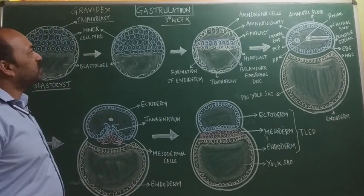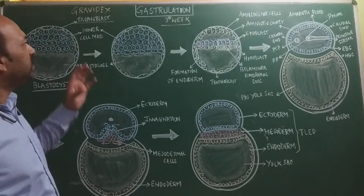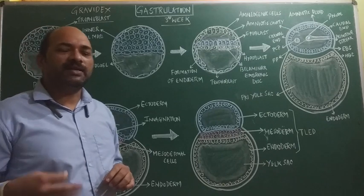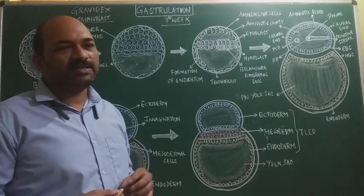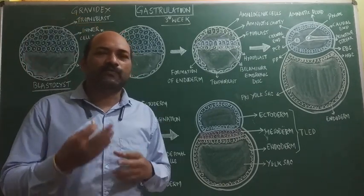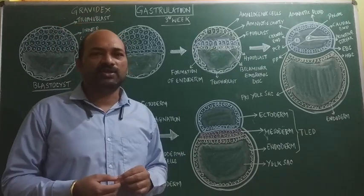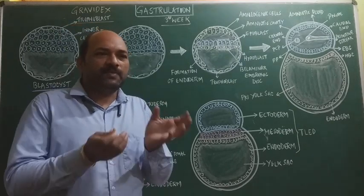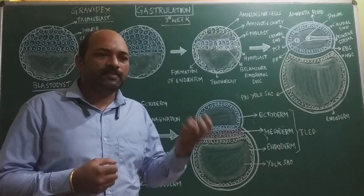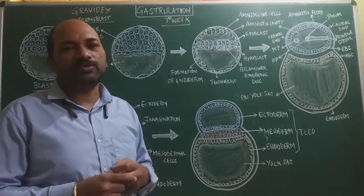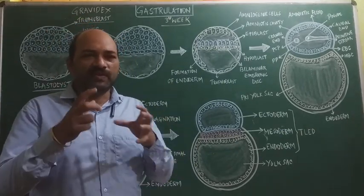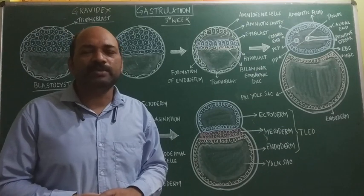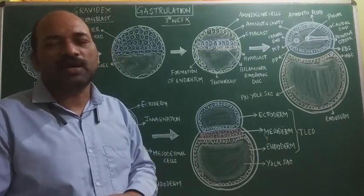In the gastrula stage, which follows the blastula, the embryo consists of more than hundreds of cells. These cells start undergoing cell morphogenetic movements or cell differentiation. This morphogenetic movement includes cell-to-cell adhesion, cell proliferation, and cell differentiation — all of which are what we refer to as cell morphogenetic movements during gastrulation.